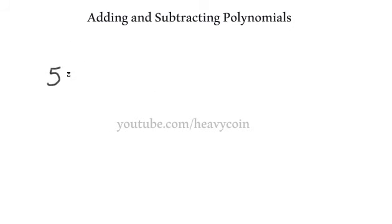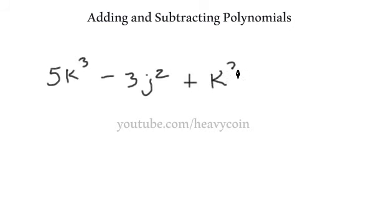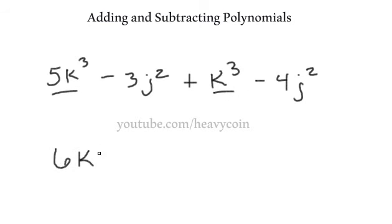What about 5k cubed minus 3j squared plus k cubed minus 4j squared? We combine like terms: 5k cubed plus k cubed is 6k cubed, and negative 3j squared minus 4j squared is minus 7j squared. Simplified: 6k cubed minus 7j squared.